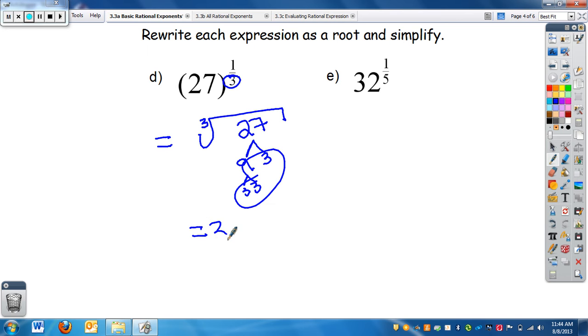On e, I have 32 and my index is five, so I need five of something to go outside. Well, 32 is 16 and 2, four and four, two-two-two-two-two. So I have five twos, so this equals two.